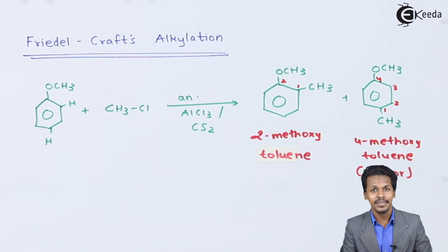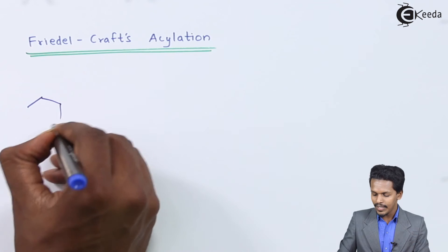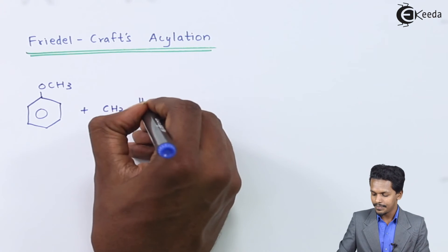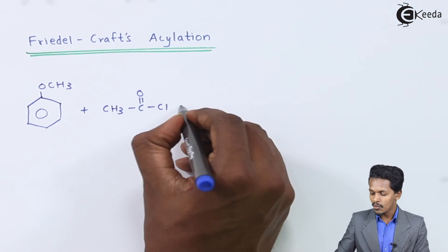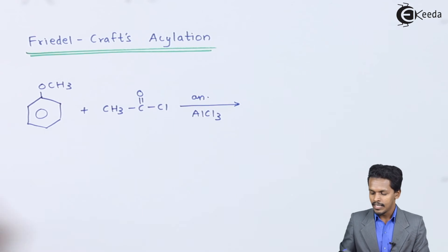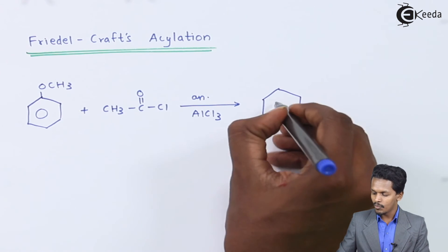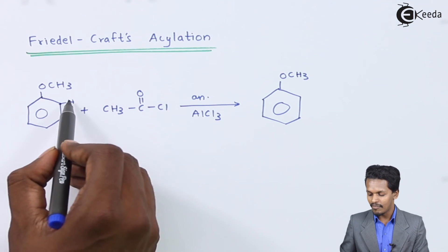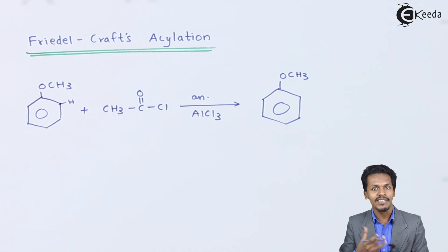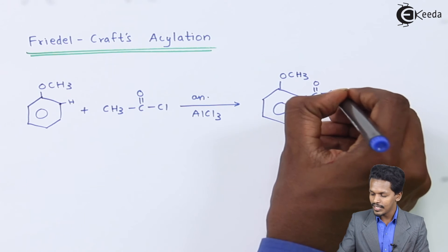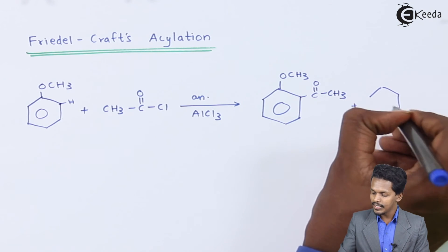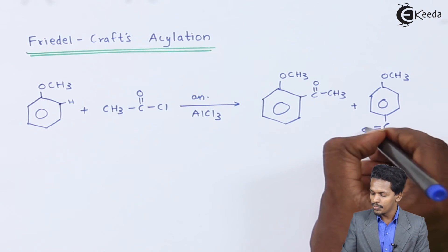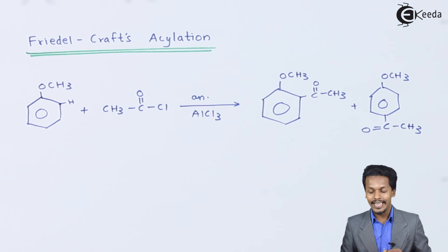Now we discuss Friedel-Crafts acylation. Anisole is reacted with acetyl chloride (CH₃COCl) in the presence of anhydrous AlCl₃. The ortho hydrogen is removed along with Cl, so HCl is released as a byproduct, and a COCH₃ group attaches at the ortho position giving an ortho product. For the para product, OCH₃ remains and COCH₃ attaches at the para position.